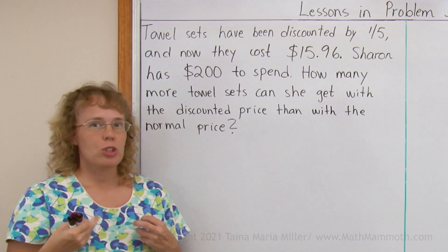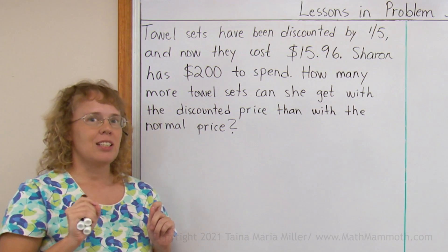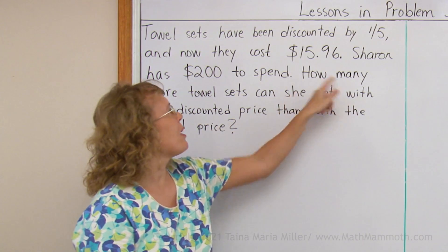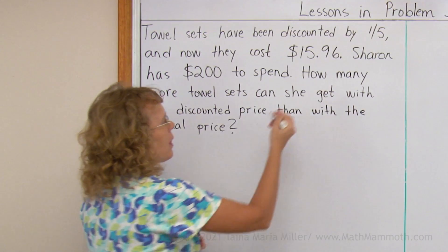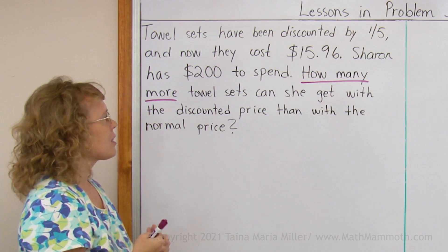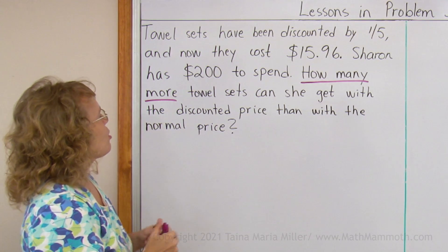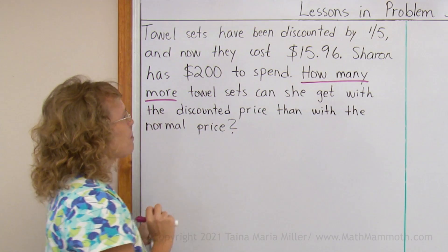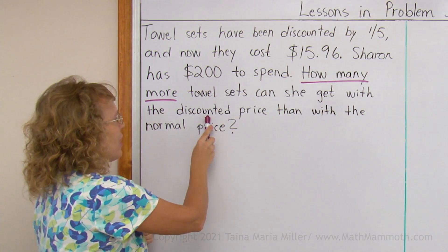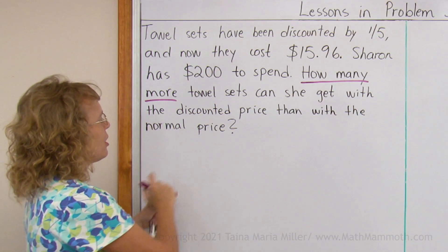But I want to write a flowchart — it's like a solution path showing what we need to solve and in what order. What we need to find out in the end is this 'how many more' question: how many more tile sets can she get with the discounted price than with the normal price? To solve that, we need to find both quantities, okay? We need to find those too.